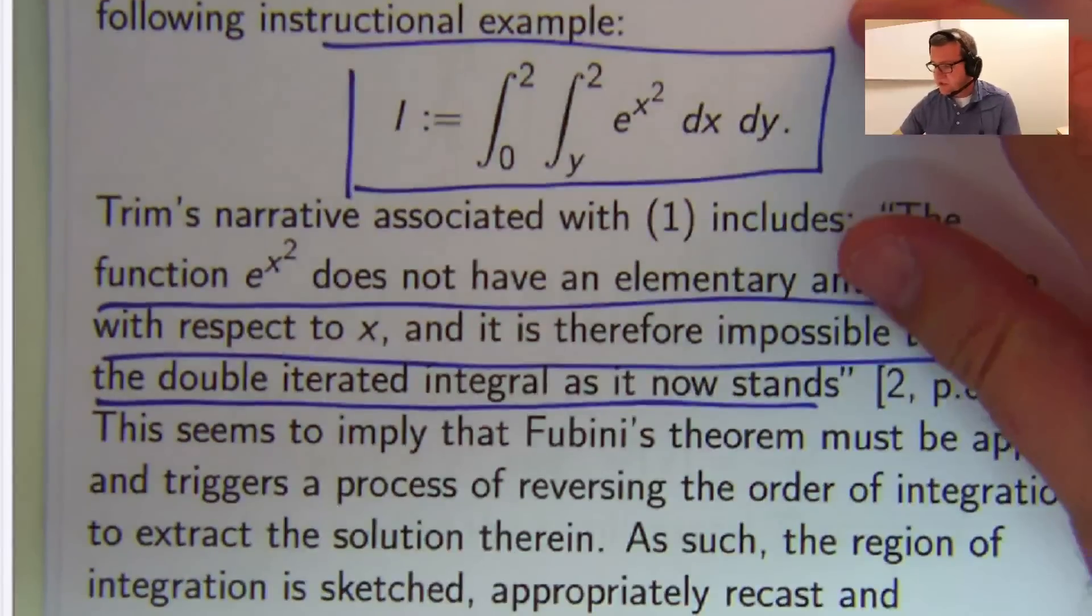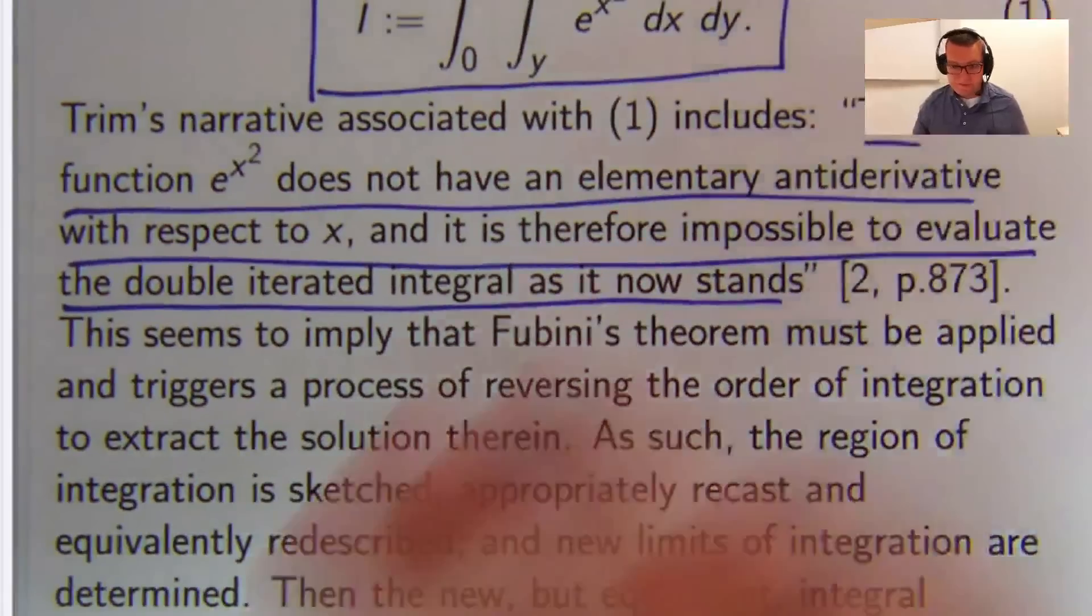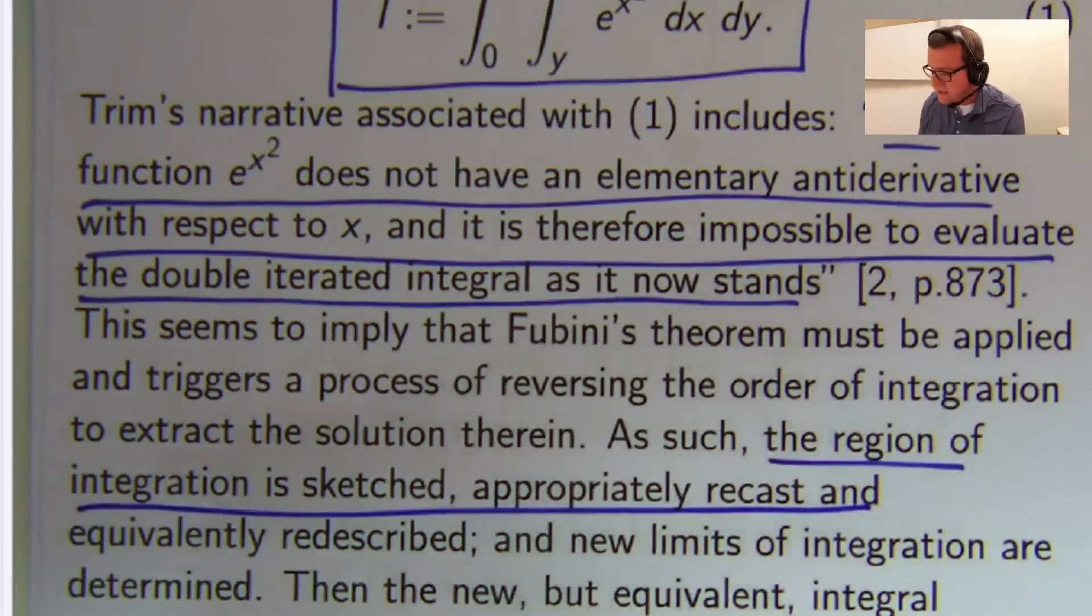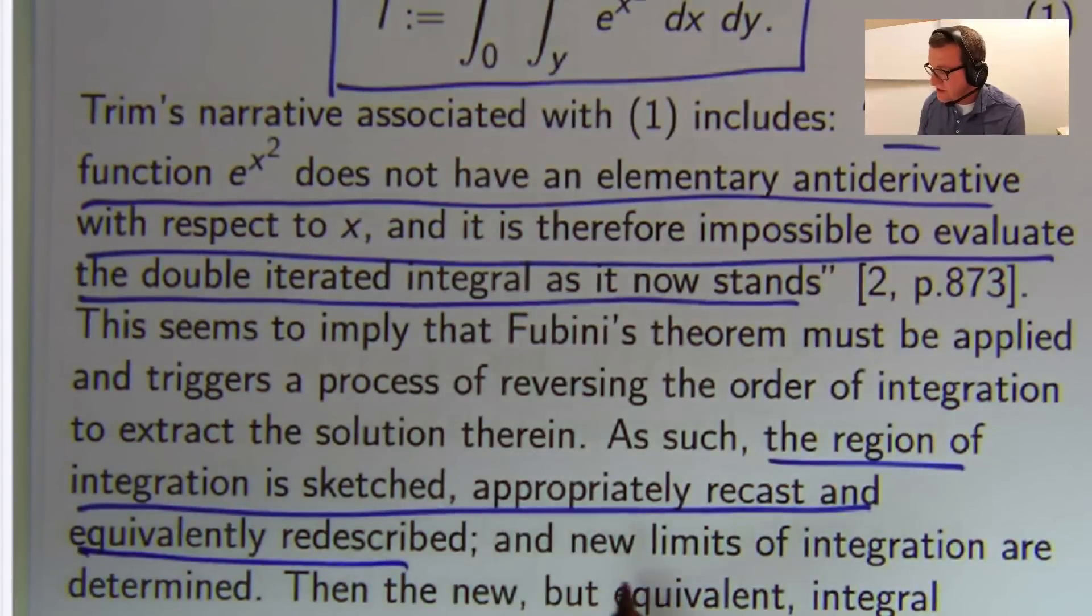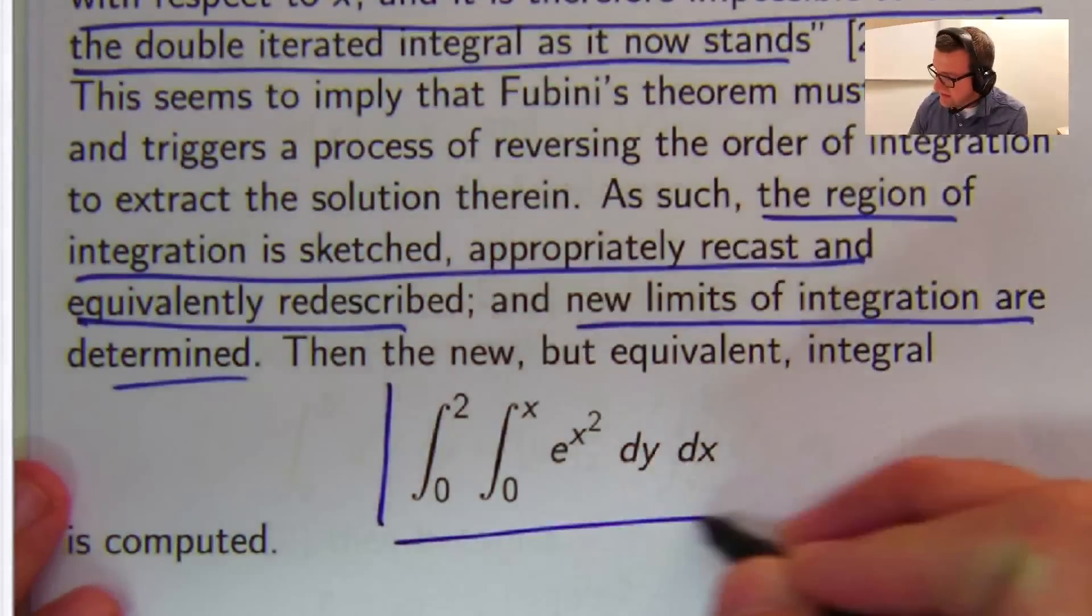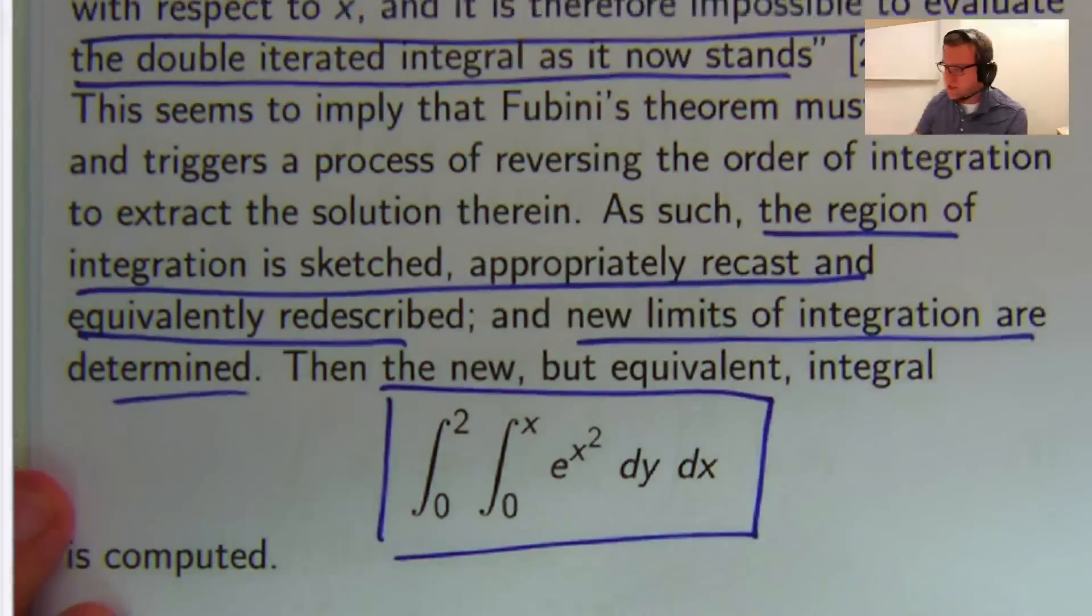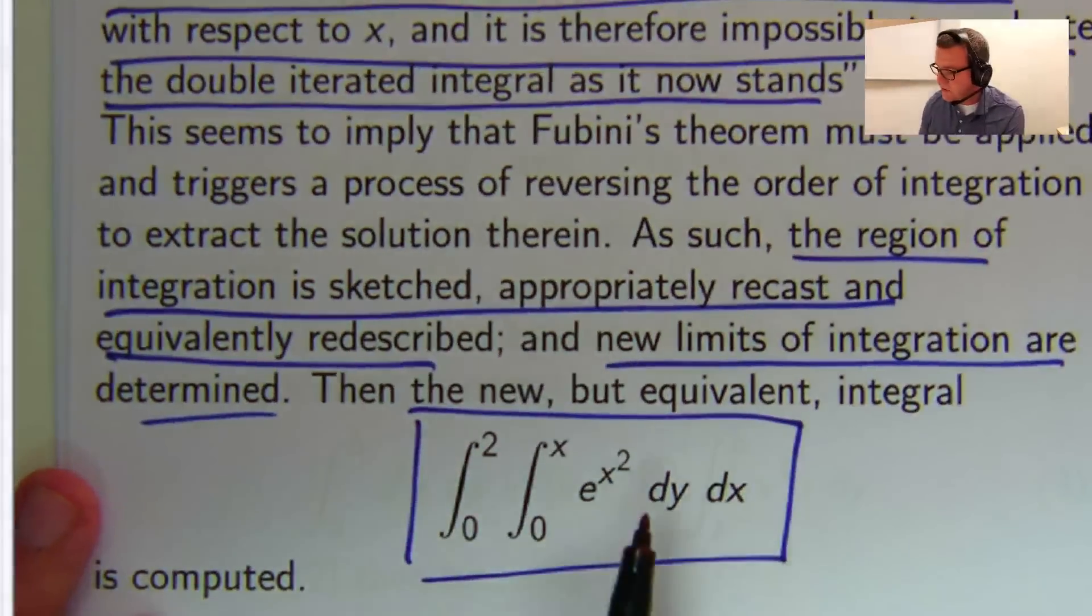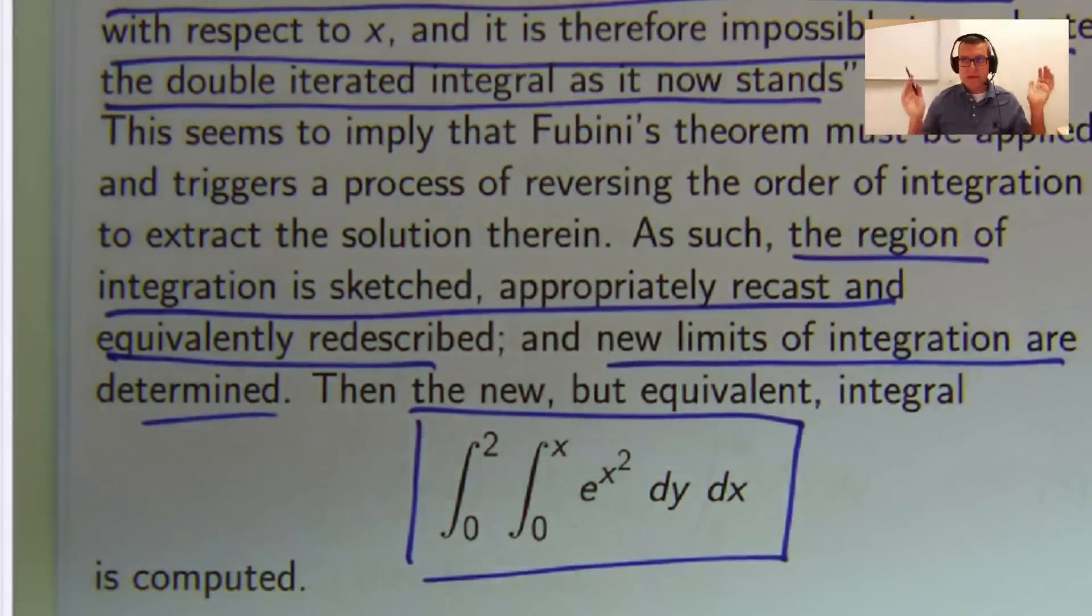Well, what do you do? Well, in this example, the region of integration is sketched, you recast it, you re-describe it, and the new limits of integration are determined. And then what you do is, once you've done that, you end up with something like this. So this integral and this integral by Fubini's theorem are the same, and of course you can integrate this with respect to y. Easy, right?